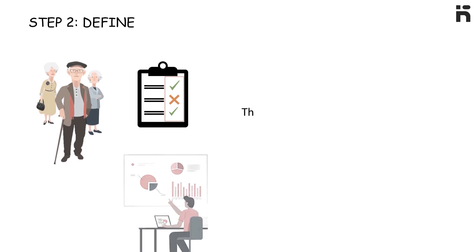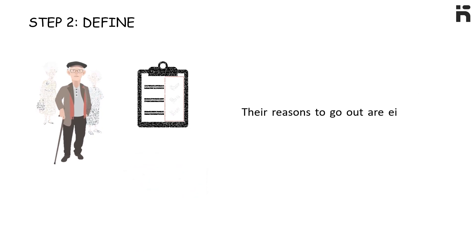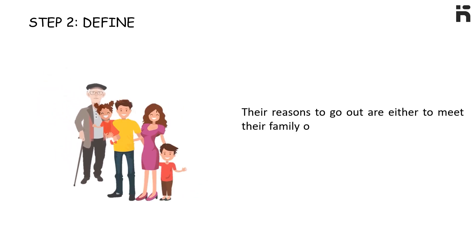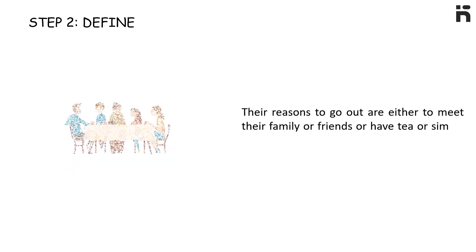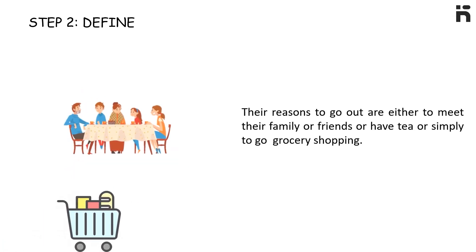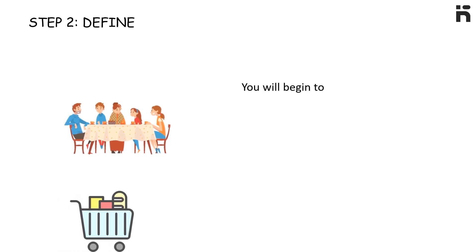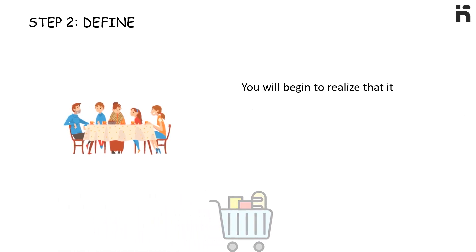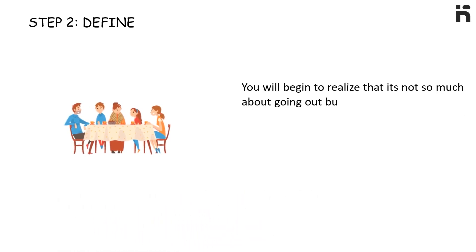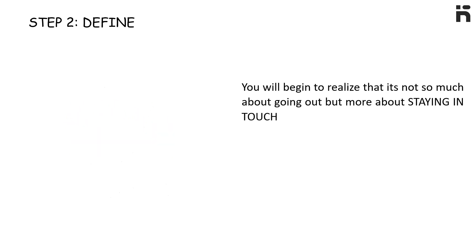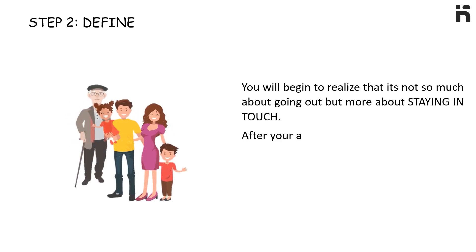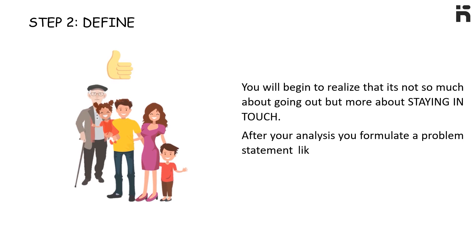Their reasons to go out can either be to meet their family or friends, have a cup of tea, or simply to go grocery shopping. You will begin to realize it is not so much about going out but more about staying in touch. After your analysis, you can formulate a problem statement like: 'Some elderly people are afraid to be lonely.'